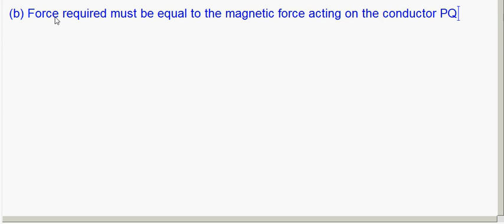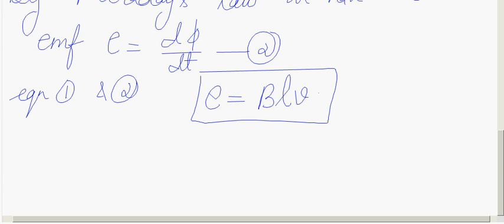Why is there a magnetic force on the conductor? Whenever a current-carrying conductor is placed in a magnetic field, it experiences a force — as we learned in the previous chapter. But is there any current in this loop?